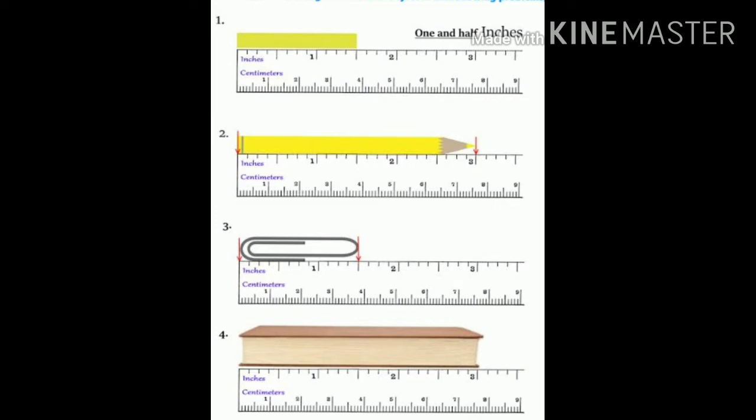The one end of the pencil is coinciding with zero, and the reading on the other end gives the length of the pencil. Here the reading on the other end of the pencil is 3, so the length of the pencil comes out to be 3 inches. This is the correct way to take measurement of length.